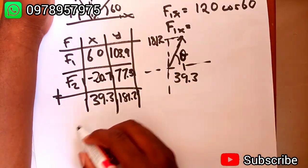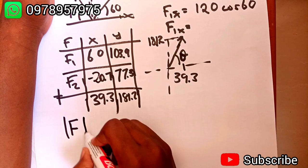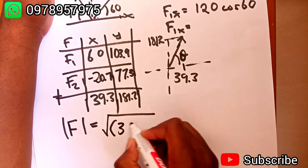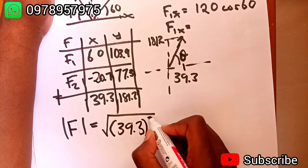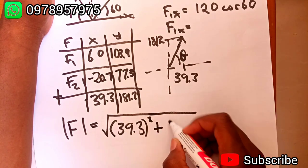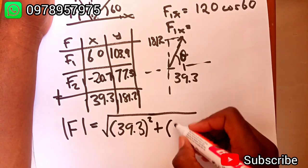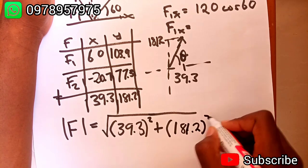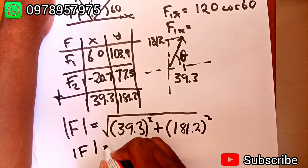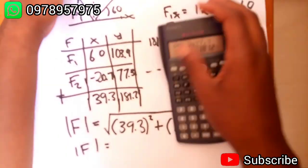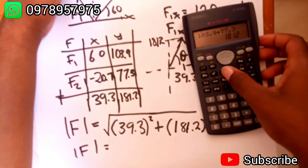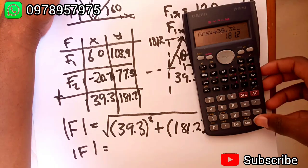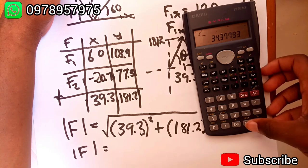Because the question has told us to find the force, so the force being a vector, we have to find the angle and the magnitude. So let's find the magnitude. F magnitude is going to give us the square root of 39.3 squared plus 181.2 squared.